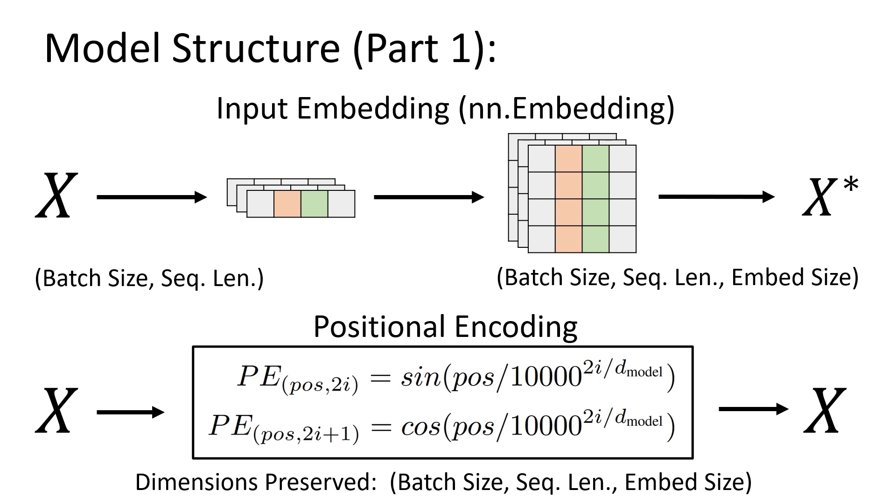The data coming into the input embedding layer is of dimensions batch size and sequence length. This layer appends an additional dimension of the user-defined embedding size. Then with the positional encoding, this is still the PyTorch positional encoding class copied into our code. This is a dimension-preserving operation where the output of that layer is batch size, sequence length, embedding size in dimension as well.